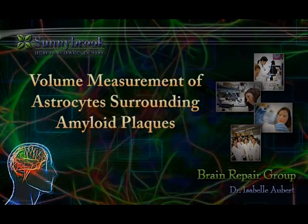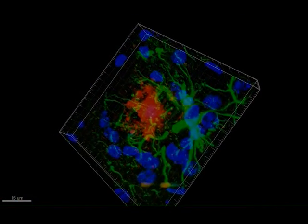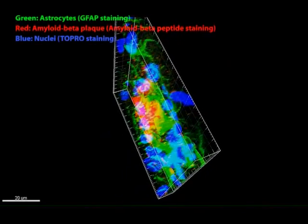In a transgenic mouse model of Alzheimer's disease, amyloid beta or A-beta plaques accumulate in the brain and are surrounded by activated astrocytes.